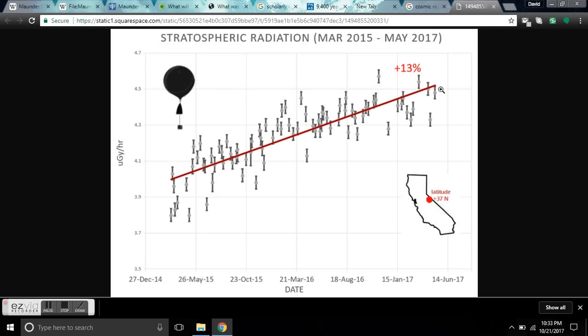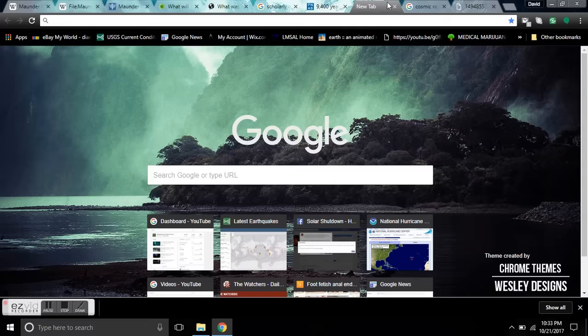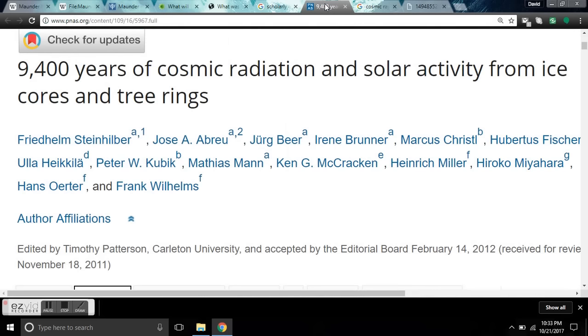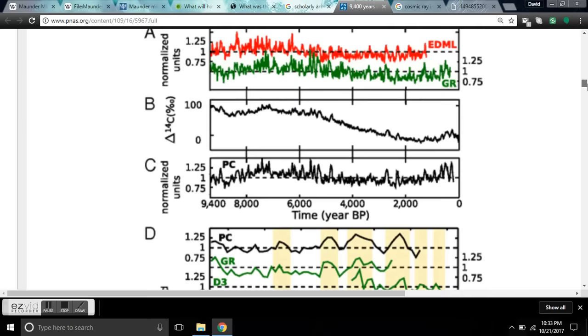And folks, this is 13% in the last two years and the prediction is for 19% in the next year and it is going to continue to increase. I have a video on this several months ago. Within 10 years, the cosmic ray flux on the planet may be dangerous to walk on the surface. So if we come back to this 9,400 years of cosmic radiation and solar activity from cores and tree rings, I'll leave you a link to this. I want to get to this graph.